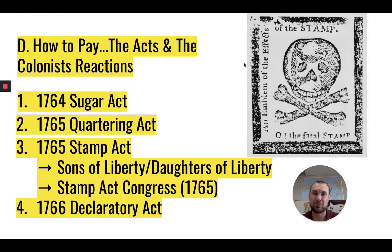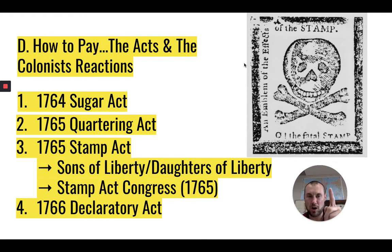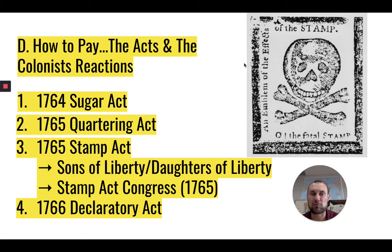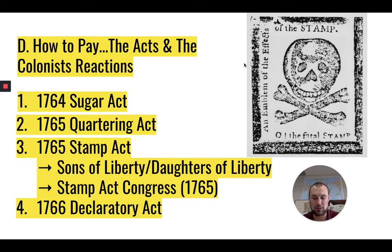Britain felt this economic pressure, so they repealed the Stamp Act in 1766 with the Declaratory Act. Colonists celebrated — we got the Stamp Act repealed. However, the Declaratory Act basically said yes, we'll repeal it, it was a bad act, we're sorry — but Parliament has the right to bind the colonies in all cases whatsoever. That's language directly from that act, basically saying we can do whatever we want, that virtual representation is right and just and we will enforce it. They drew the line in the sand — the line was set 10 years before the Declaration of Independence.